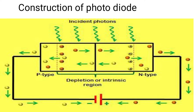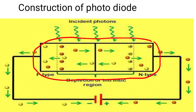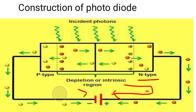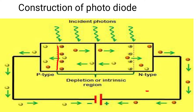In the construction of the photodiode, the P-type (anode) is connected to the negative terminal of the battery and the N-type is connected to the positive terminal — meaning it is connected under reverse bias. Under reverse bias, the depletion layer width is very large, as indicated by the dotted lines in the diagram.